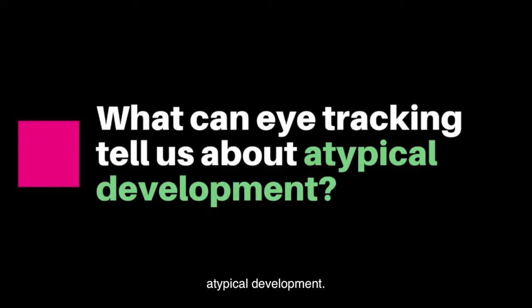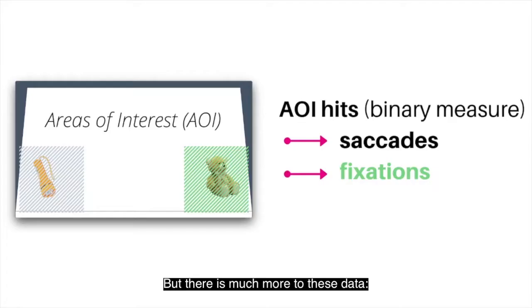I showed you before how we can draw some interesting conclusions about young minds and mechanisms of language learning from relatively simple eye tracking data, but there is much more to these data. Each visit to an area of interest or an AOI might be composed of different looking behaviors. For example, there can be more or less saccades or eye movements, or the fixations occurring within an AOI—that is, periods of time when the eye is stationary on different parts of the target—can have different duration.